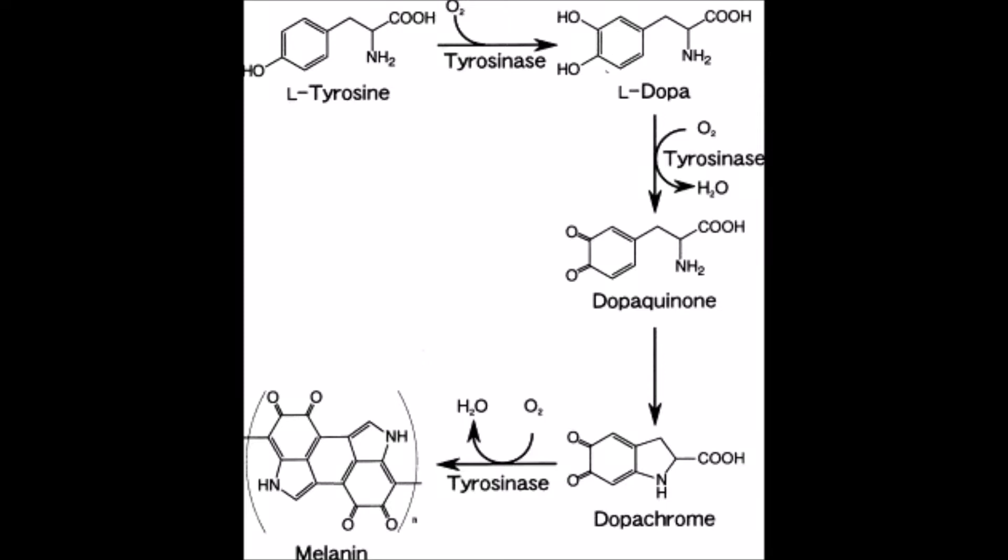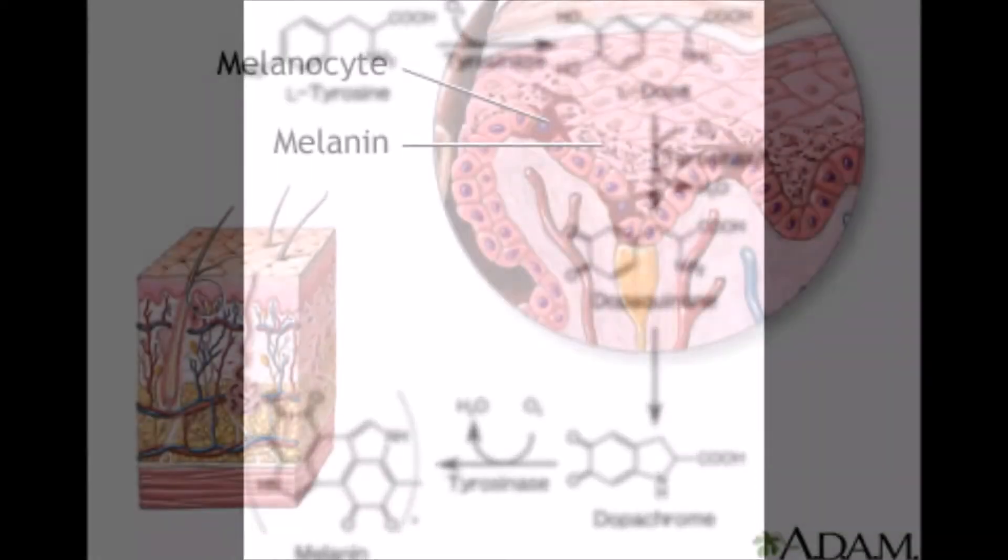Tyrosinase is an enzyme that is best known for its role in the synthesis of melanin. Tyrosinase uses one of its two active sites to convert the amino acid tyrosine into dopakinone, which is later transferred to melanin.